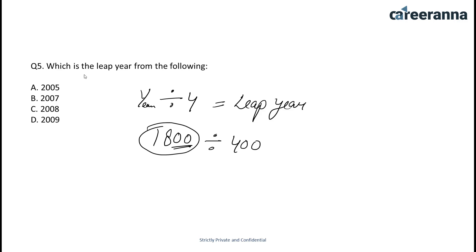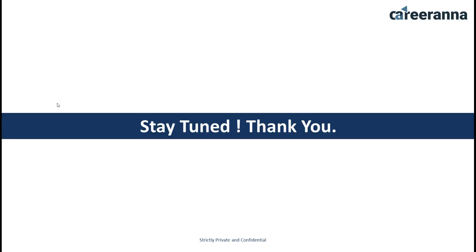Otherwise it is an ordinary year. So which is the leap year from the following? 2005 is not divisible by 4, and 2007 is also not divisible by 4, but 2008 is divisible by 4. So 2008 is the leap year — option C is correct. Thank you for watching the video, stay tuned for more videos and subscribe to our channel.